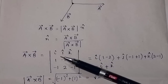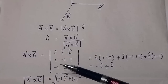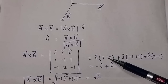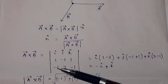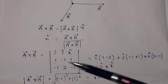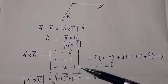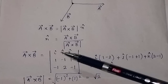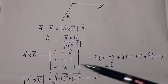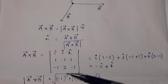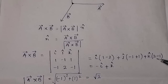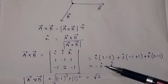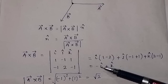Taking the determinant: for i-cap, multiply (minus 1)(minus 1) = 1, minus (2)(1) = minus 2, giving minus 1. For j-cap, take minus of [(minus 1)(1) = minus 1, minus (minus 1)(1) = plus 1], giving 0. For k-cap, take (2)(1) = 2, minus (minus 1)(1) = plus 1, giving 2 minus 1 = 1.